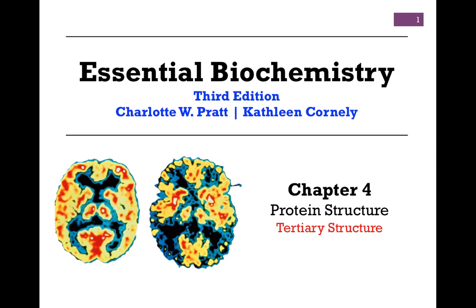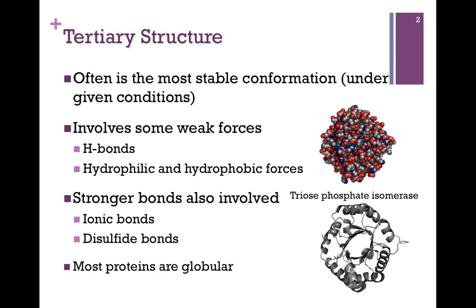In our next lesson on protein structure in Chapter 4, we want to look specifically at tertiary structure. We find it's often the most stable conformation under a given set of conditions. It involves some weak forces, such as hydrogen bonds, some hydrophilic and hydrophobic forces, but there are also stronger bonds involved, such as ionic bonds and disulfide bonds.